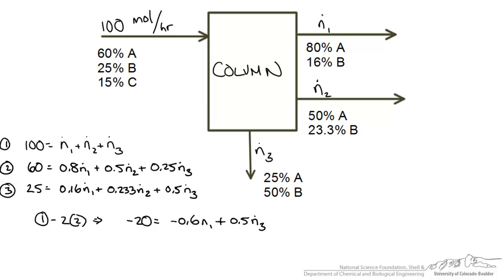I am going to look at elimination one more time. So if I subtract out 2 times equation 3 from equation 1 I could eliminate the variable n3. And what I am left over with is the following.